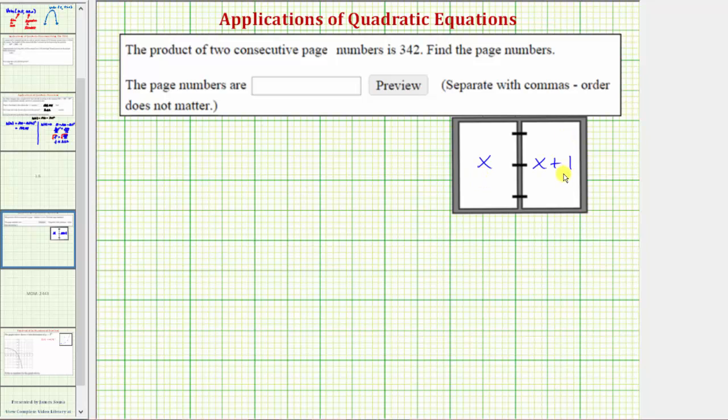And we know the product of these consecutive page numbers is 342, and therefore x times the quantity x plus 1 must equal 342. So if we solve this equation for x, we can determine the consecutive page numbers.